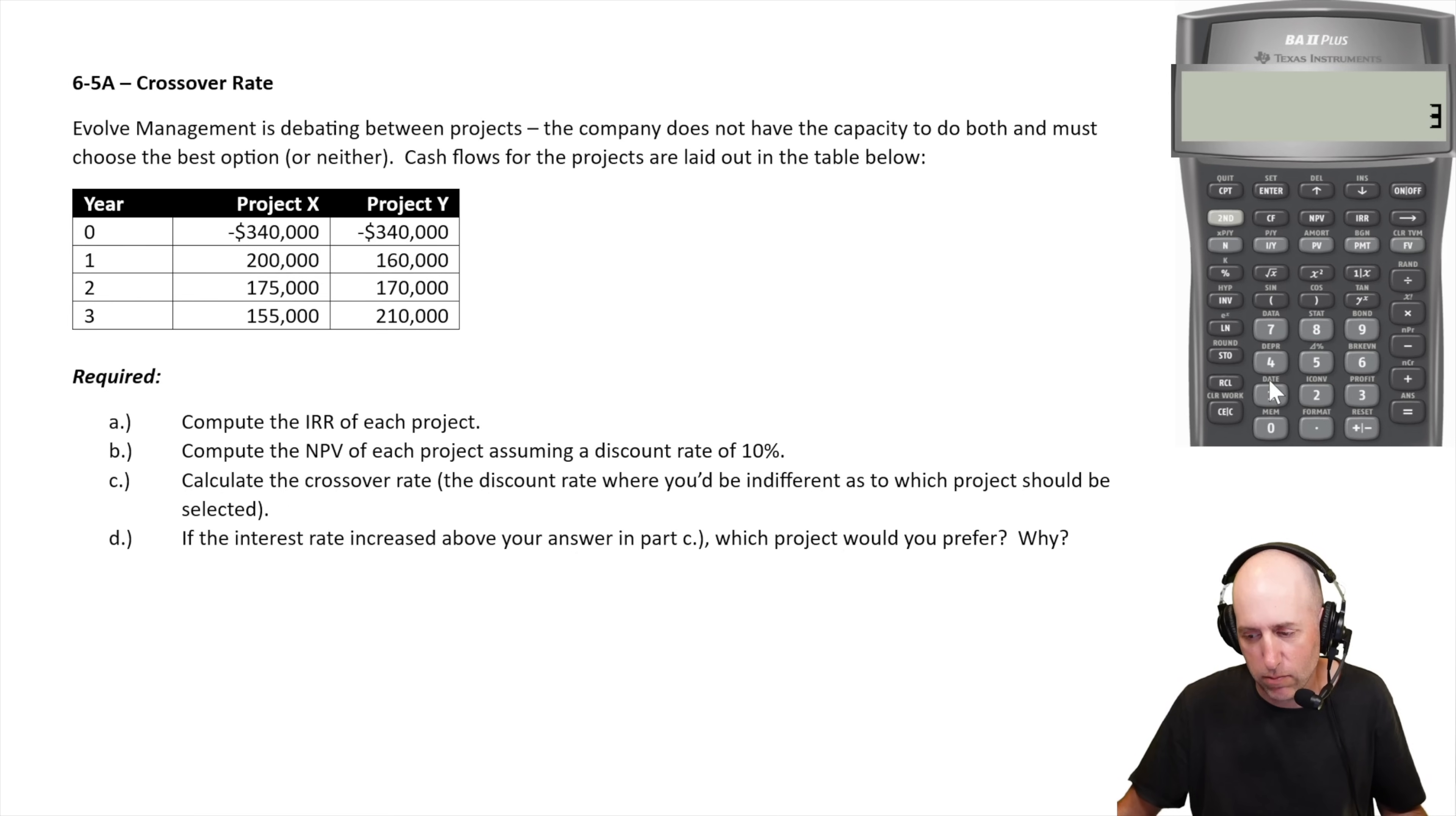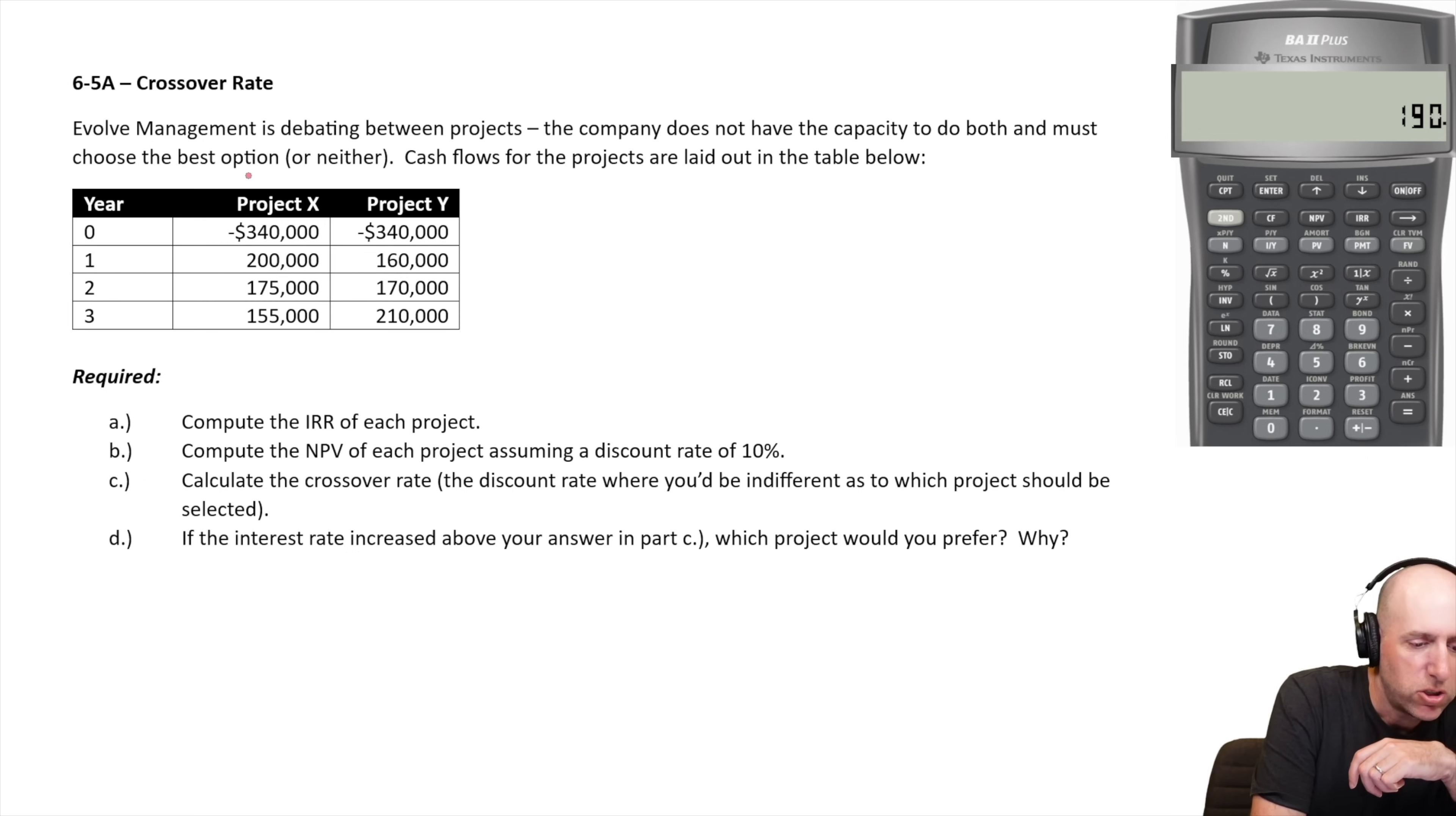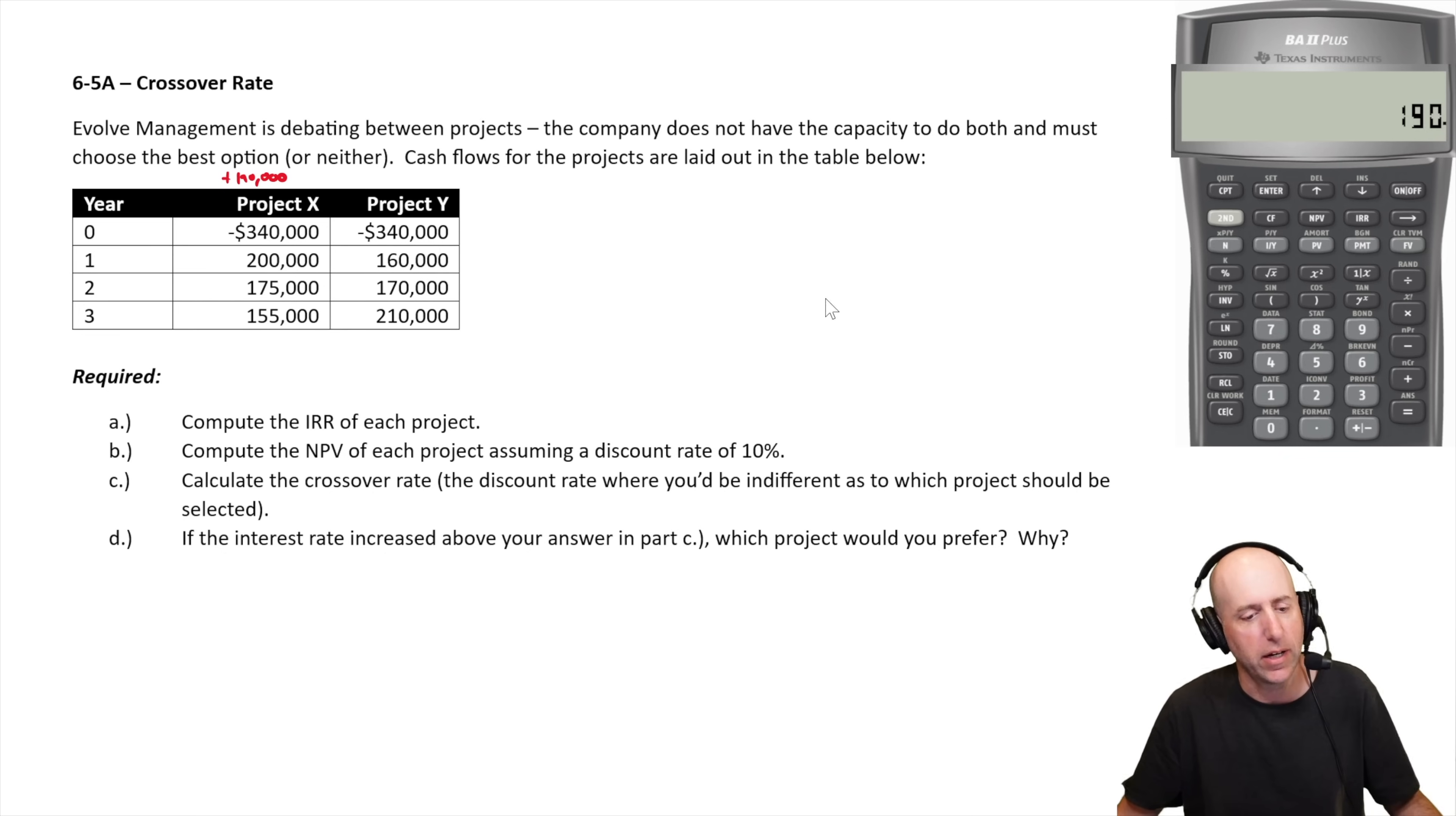Let's just do some math here. 340, so I'm looking at project X. 340 negative plus 200 plus 175 plus 155. If we do the project just purely based on a cash basis without thinking of time value of money, we end up ahead 190 grand.